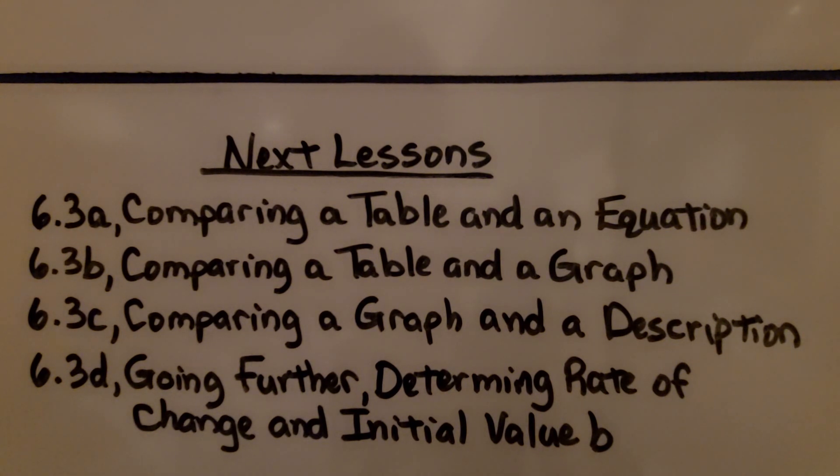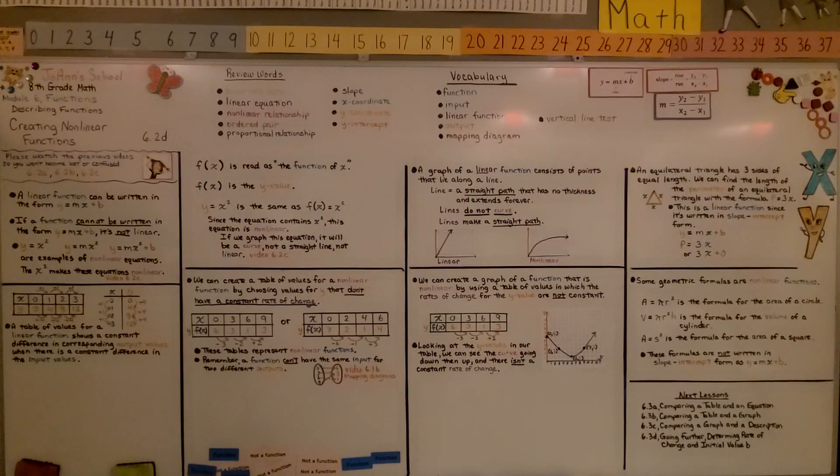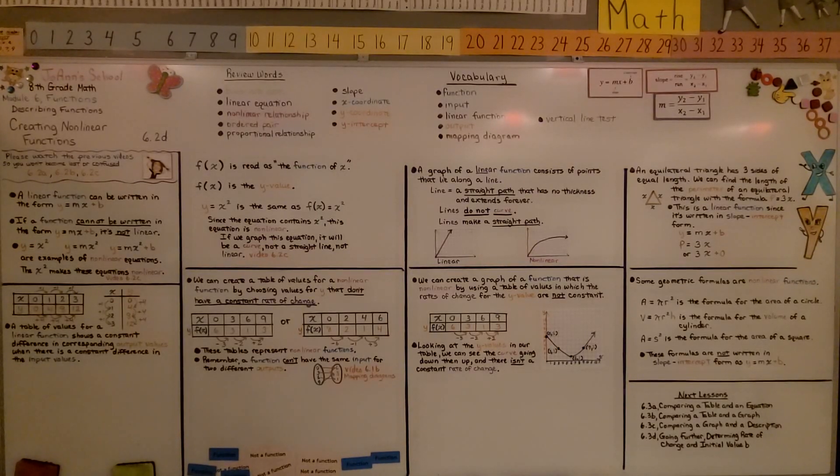We're finished with lesson 6.2. We're going to be moving on to 6.3 and begin by comparing a table and an equation. If any of this was confusing, then you probably got ahead of yourself and you need to go back and watch the previous lessons. At least go back to 6.2a and then get a running start forward. I hope you're doing well and please join me for the next lesson.